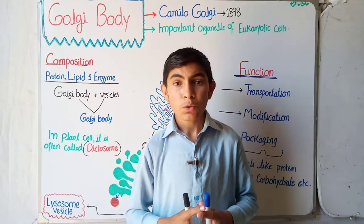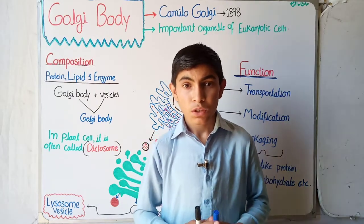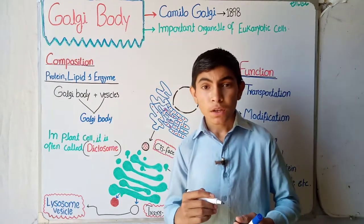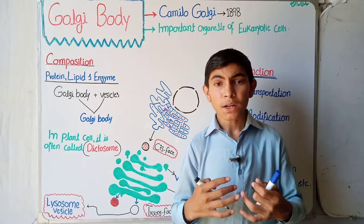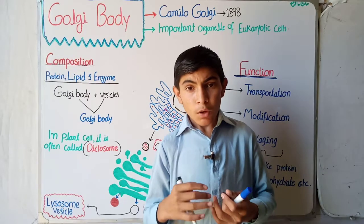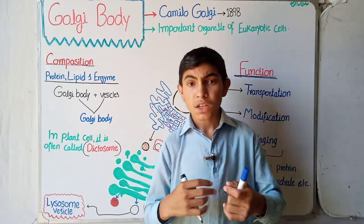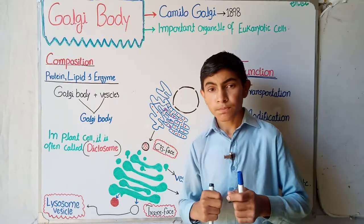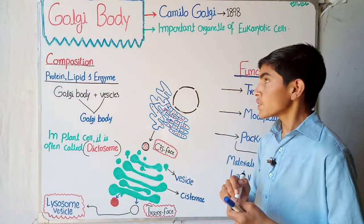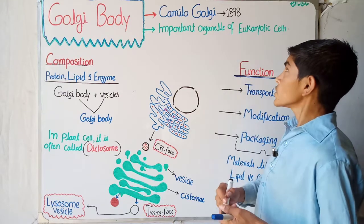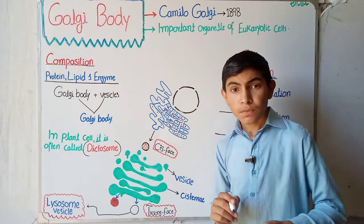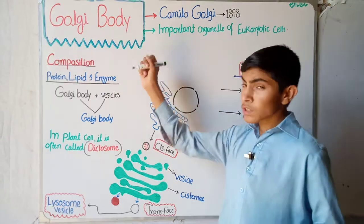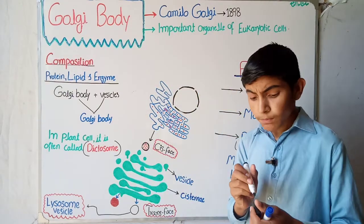Assalamu alaikum, welcome back to Ramzan Biology. Today our topic of discussion is the Golgi body. The Golgi body is one of the most important organelles of the eukaryotic cells. We have been talking about the different organelles of the eukaryotic cells. The Golgi body was personally discovered by Camillo Golgi in 1898, and on the basis of the scientist's name it is also known as the Golgi.